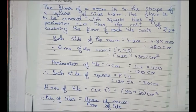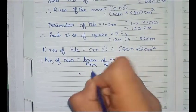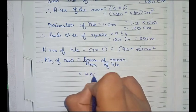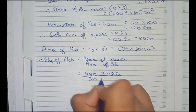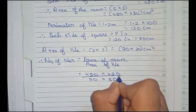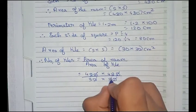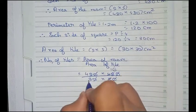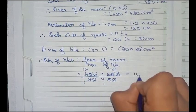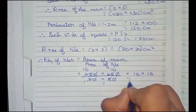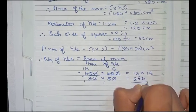Area of room is 480 into 480 divided by area of tile 30 into 30. Cutting the zeros, then 48 and 3, we get 16 into 16, which equals 256. So total 256 tiles will be required.